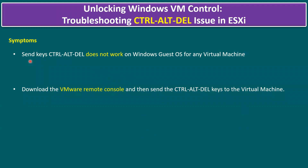The symptom is when we are trying to send the keys Ctrl+Alt+Delete, it doesn't work on Windows guest OS for any virtual machine — any Windows flavor. Another main scenario is in production environments where we have multiple ESXi hosts and use vCenter Server to verify virtual machine status. If it is a Windows VM, we can press Ctrl+Alt+Delete or send the keys Ctrl+Alt+Delete to unlock the Windows guest VM.